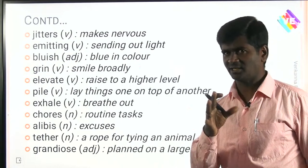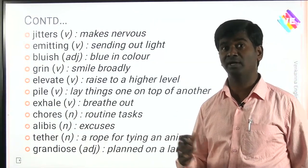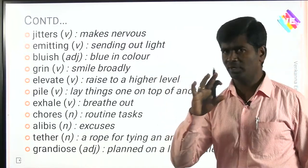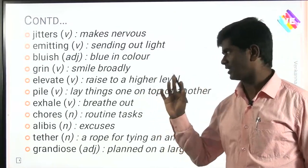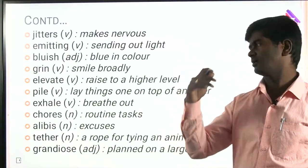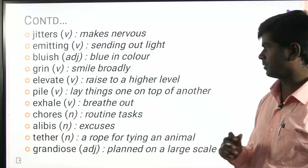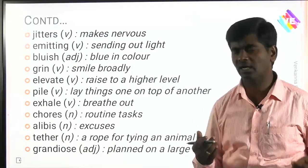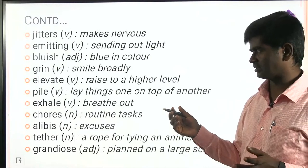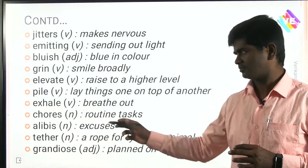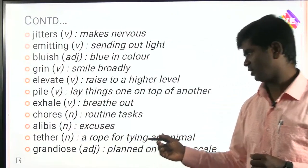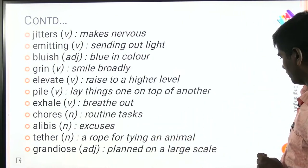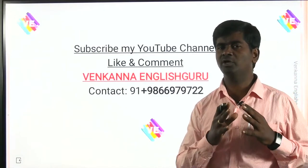Now Unit 5 vocabulary. 'Glitters' means emitting or shining. Cell phones emit a number of rays. 'Bluish' means blue in colour. 'Grin' means smile broadly. 'Elevate' means rise to a higher level. 'Pile' means to lay things one on top of another — files pile up. 'Exhale' means breathe out; the opposite is inhale. 'Chores' means routine tasks. 'Alibis' means excuses. 'Tether' — a rope for tying an animal. 'Grandiose' — planned on a large scale.